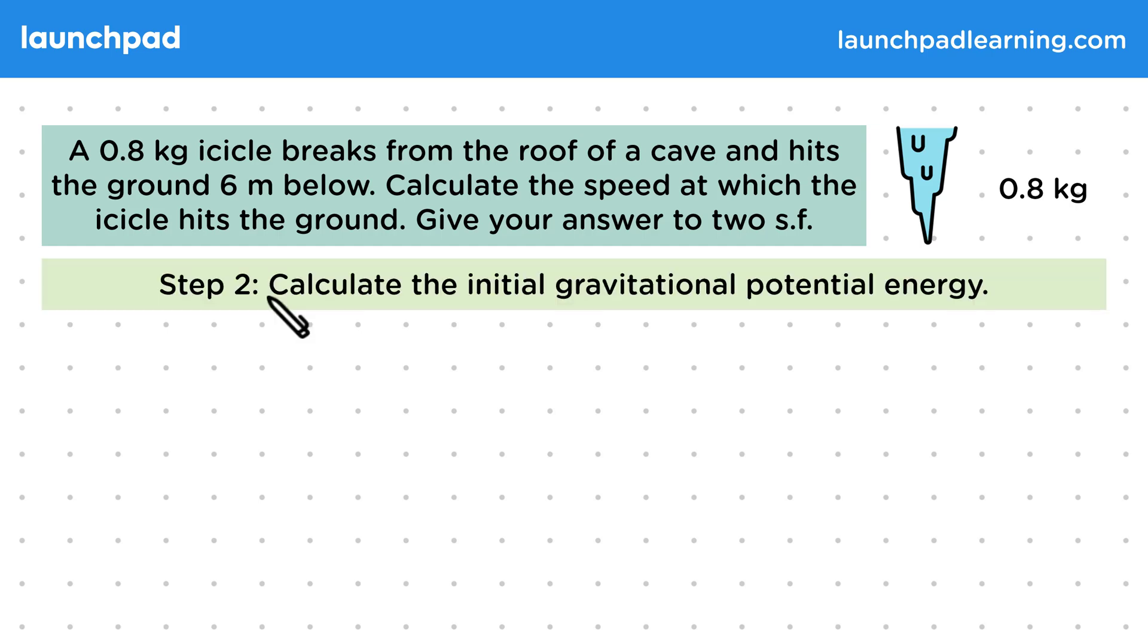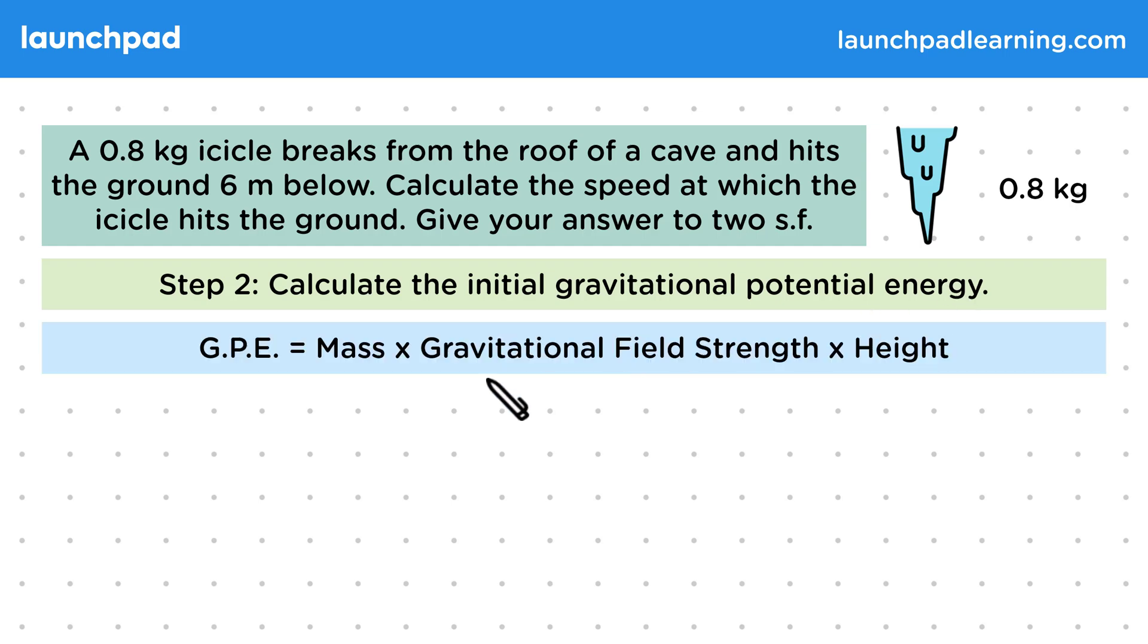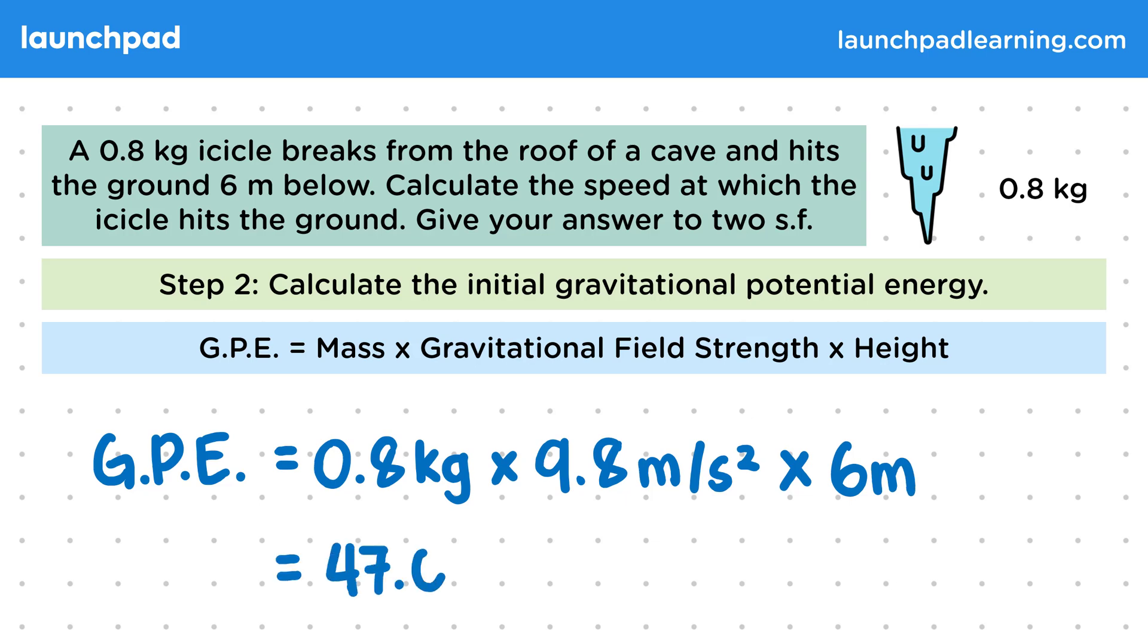So for step two, let's calculate the initial gravitational potential energy. So GPE is equal to mass multiplied by gravitational field strength multiplied by height. So the GPE is equal to 0.8 kg multiplied by 9.8 metres per second squared multiplied by 6 metres, and that is equal to 47.04 joules. At this point in the problem, we should keep the value exact instead of rounding.